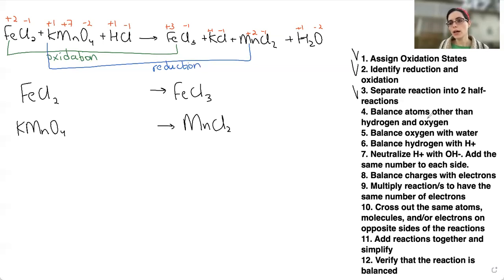Number four, balance atoms other than hydrogen and oxygen. Here we have one iron on this side, one iron on the other side. So irons are balanced. Chlorines, we have two chlorines on this side, three chlorines on this side. So I will add HCl to balance chlorines. So our hydrogen is not balanced, but in this step specifically, we are balancing atoms other than hydrogen and oxygen. So it doesn't matter that hydrogen is not balanced. Don't worry. You can go to the next step.